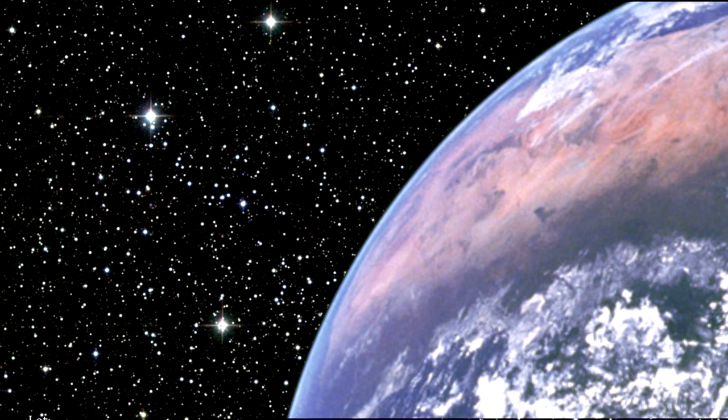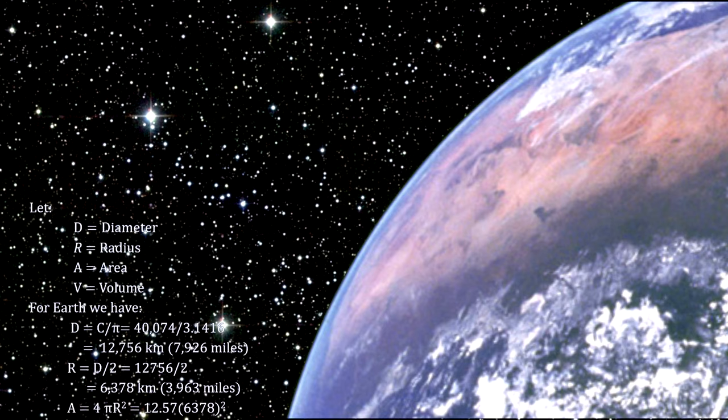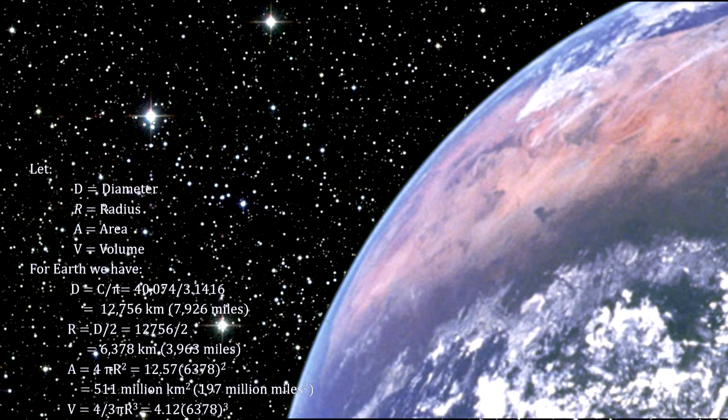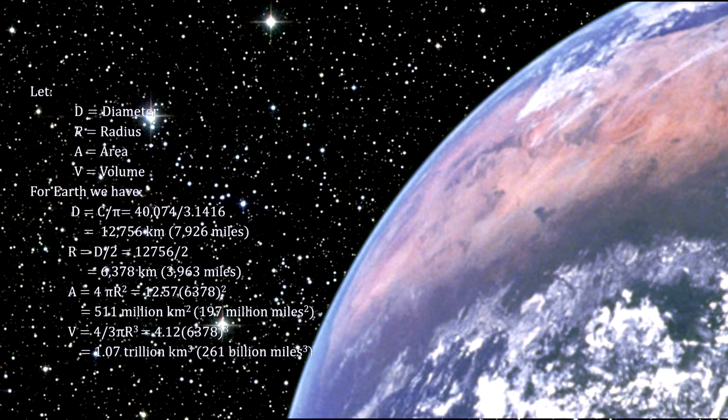Once we have the circumference, geometry gives us the rest. For a spherical earth, the diameter is equal to the circumference divided by pi, 12,756 km. The radius is half the diameter, so it's 6,378 km.